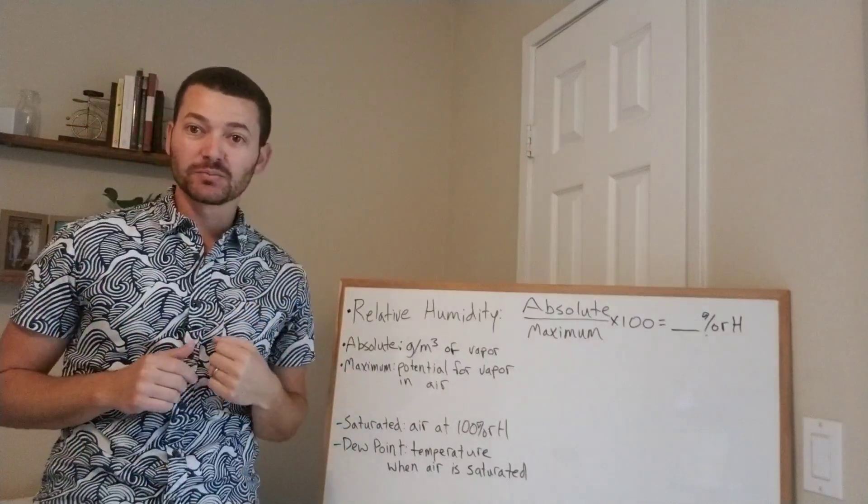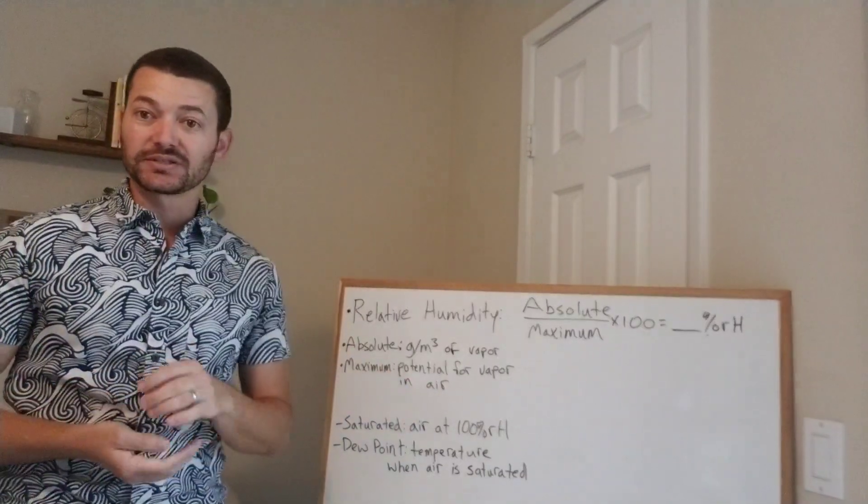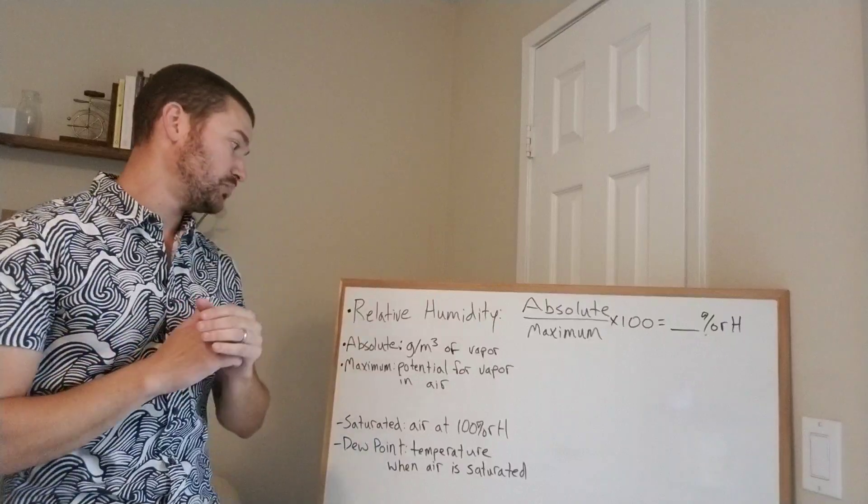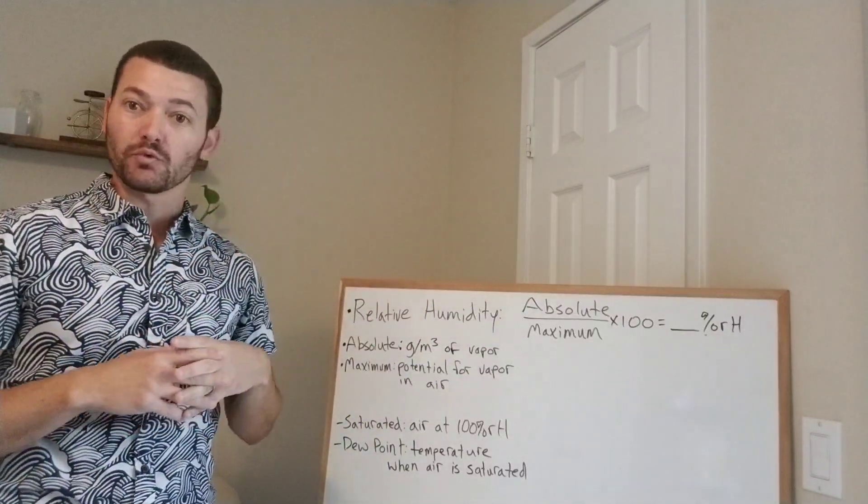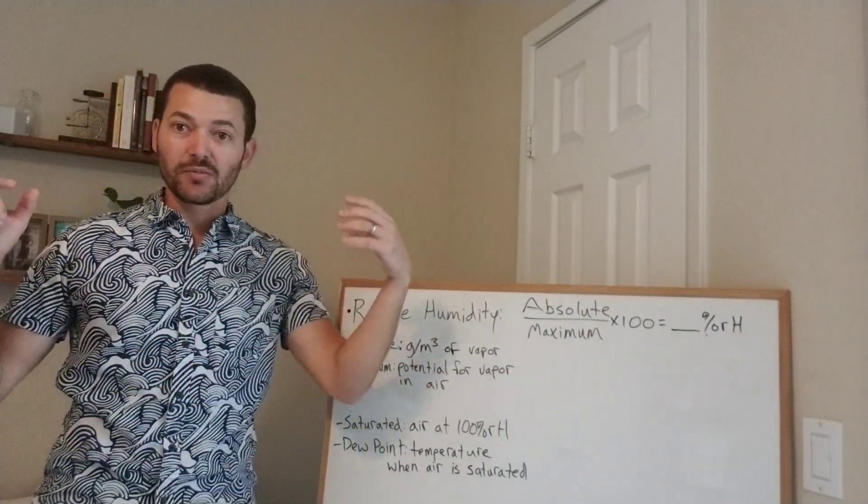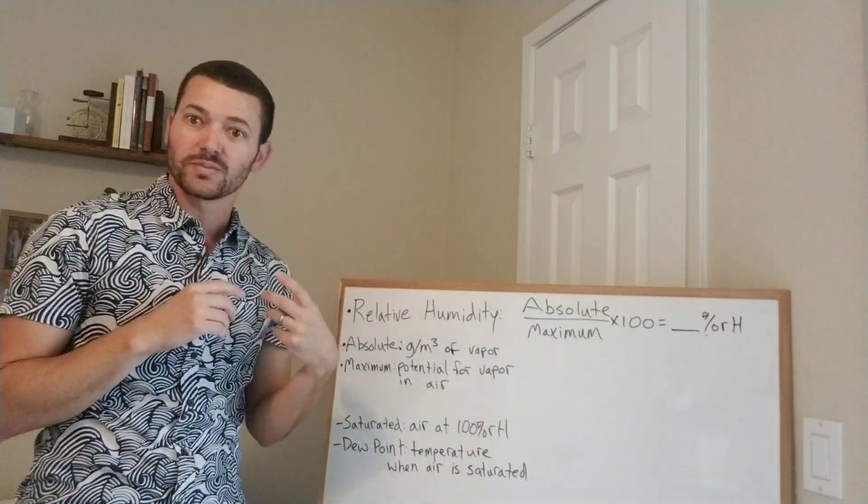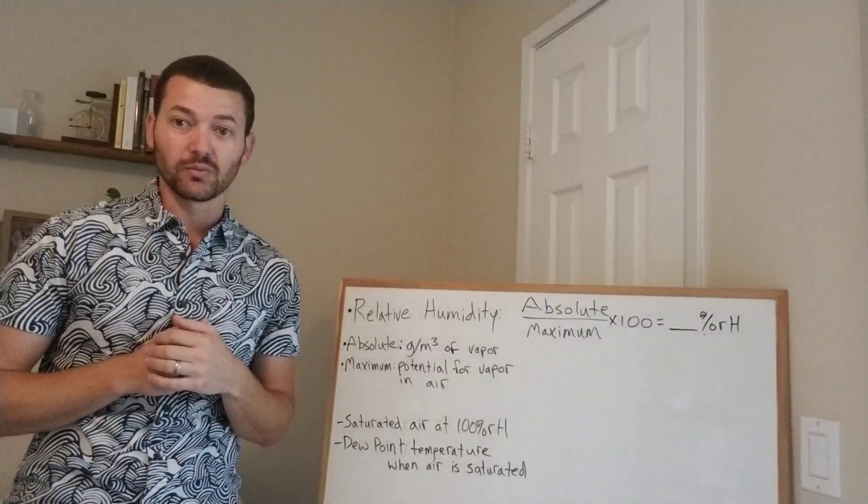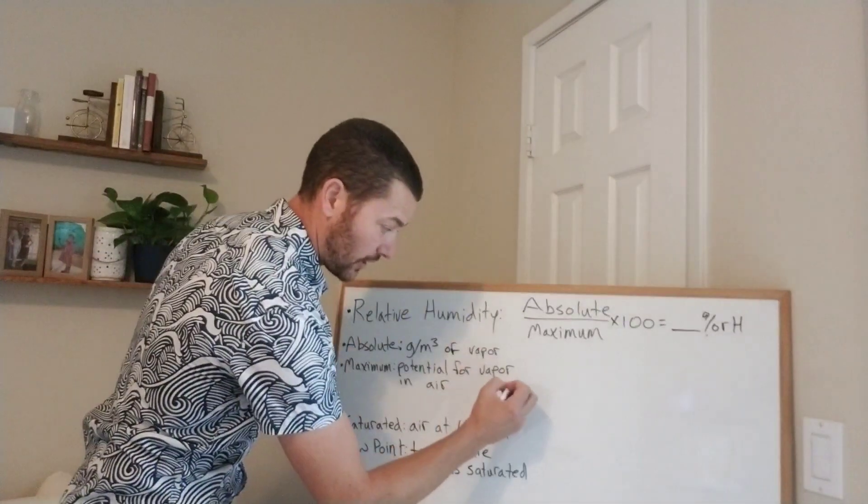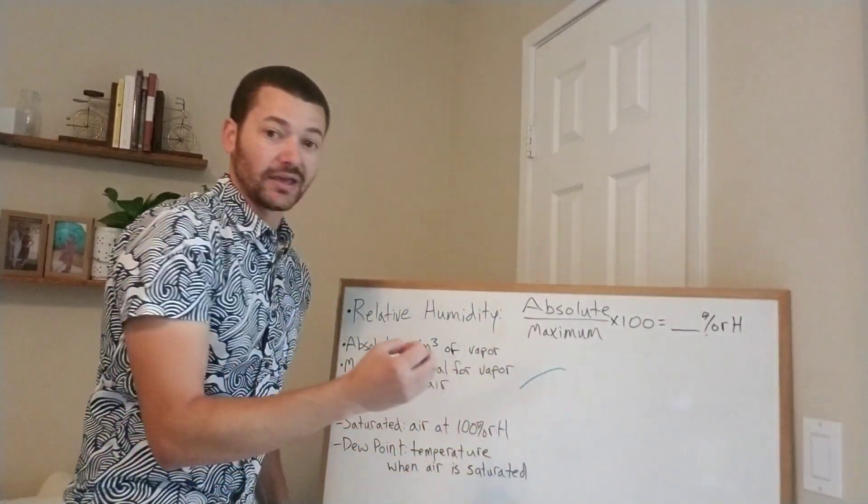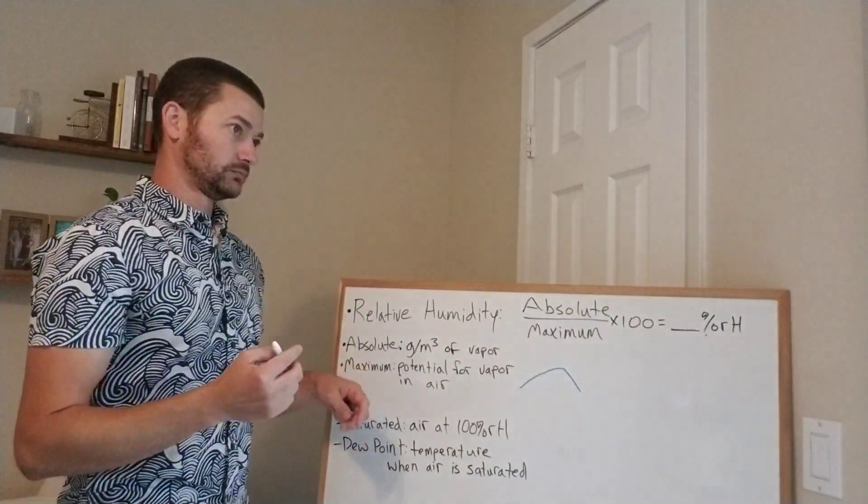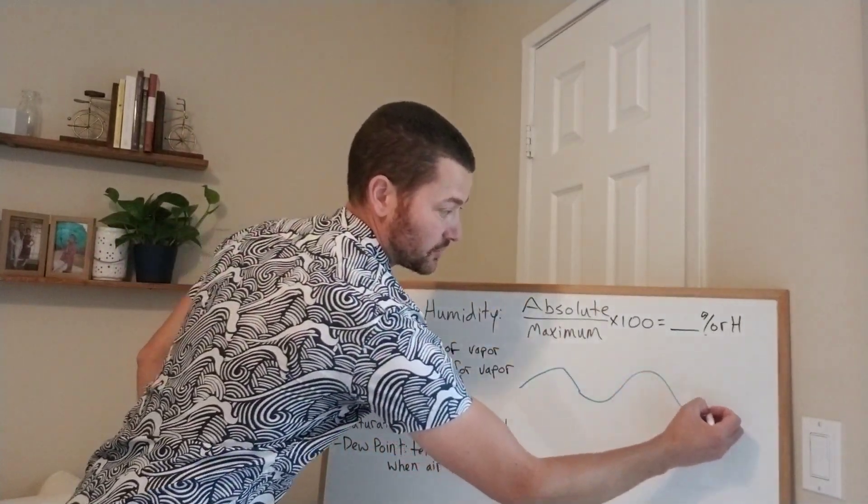Maximum humidity is the maximum potential for vapor in your air. That is based on air temperature. As you probably hopefully saw in the lecture notes, warm air expands. The air molecules are less dense, so there's more room for water vapor in the air. So warm air holds more vapor. And then cold air, those air molecules contract. They come together, so there's less room in that air. So that cold air holds less water vapor. So maximum potential actually increases and decreases with air temperature. So it'll go up as air gets warmer, and it'll go down as air gets colder.